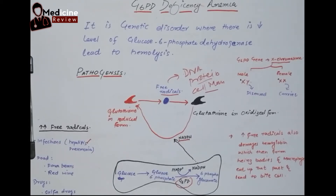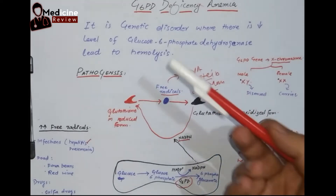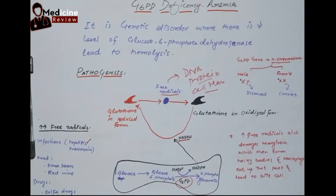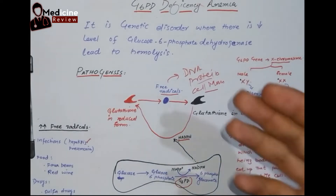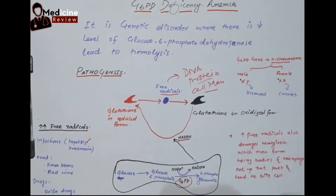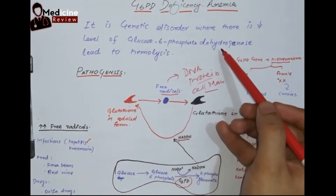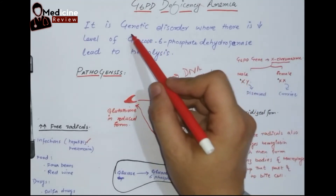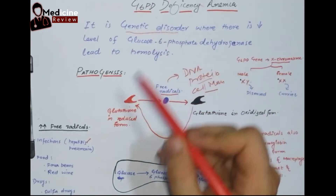Bismillahirrahmanirrahim. This is Dr. Osman Akhtar and welcome to my YouTube channel. Today our topic is glucose 6-phosphate dehydrogenase deficiency anemia, which is also called G6PD deficiency anemia. It is a type of hemolytic anemia where there is a deficiency of the glucose 6-phosphate dehydrogenase enzyme, and most importantly, this is a genetic disorder.